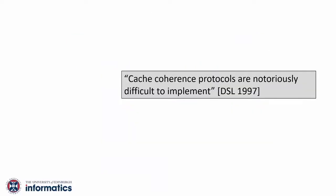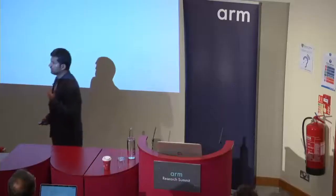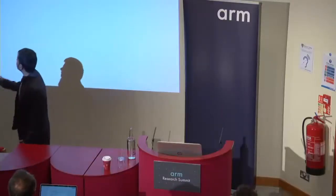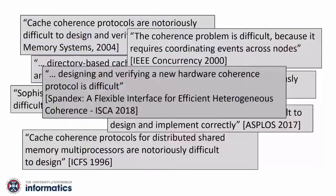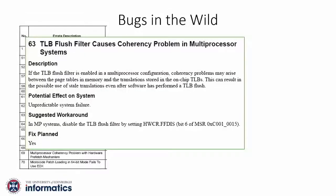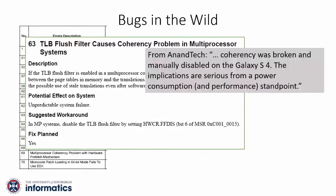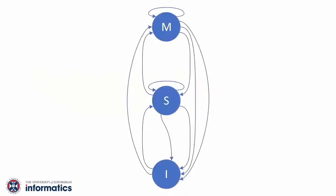Cache coherence protocols are notorious in the sense that they are really hard to implement and verify. And if you do not believe us, look at all of these papers in academia. It is not only in academia — there are real bugs in real processors with dedicated validation and design teams. If you look at this simple textbook protocol, a classical MSI protocol, there are a handful of stable states and a handful of transitions. So what is so hard about it?